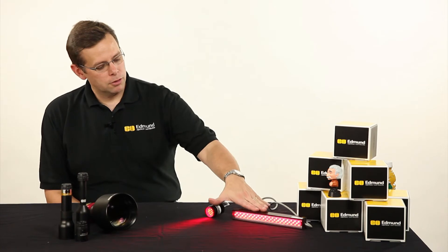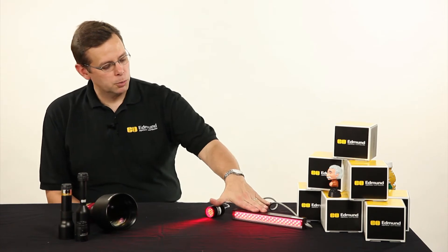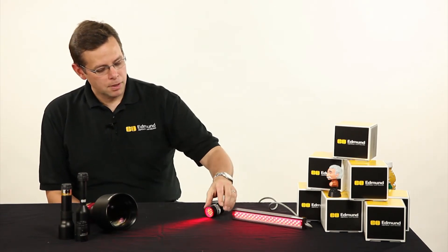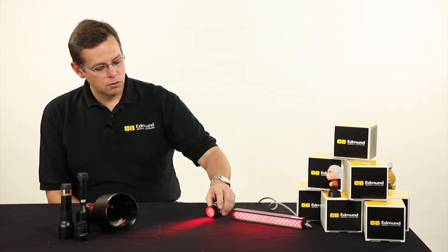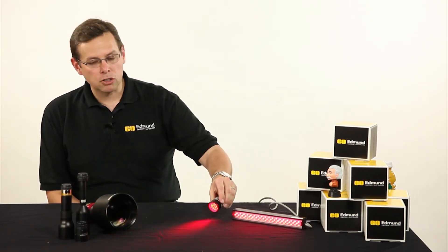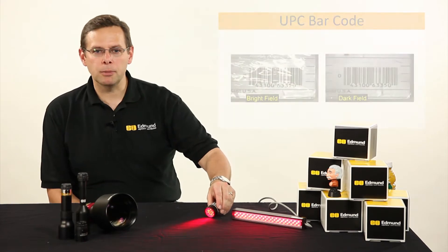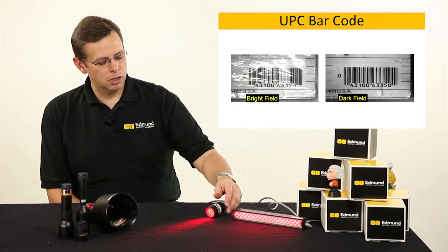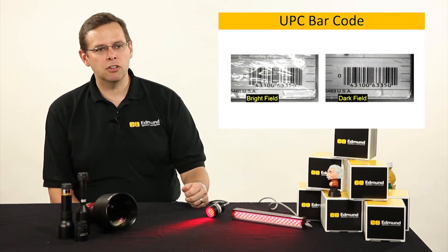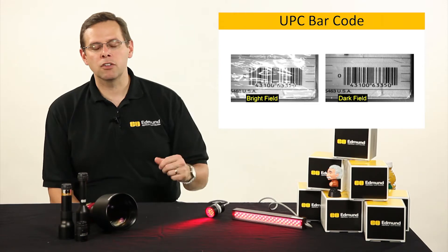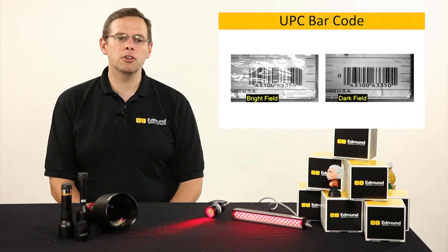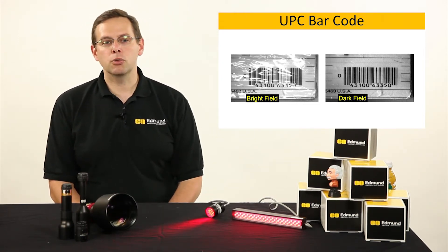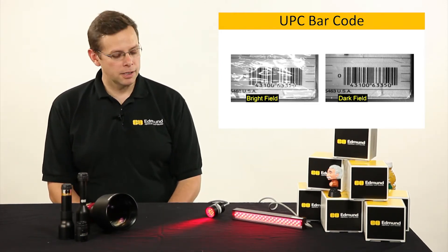I have a couple of directional illumination pieces here on the tabletop. I think you can see in the video that we have some light streaming across the table. As you can see in the image that's coming up on the screen, directional illumination can have a variety of effects depending on the surface topography and the actual surface material that is there.